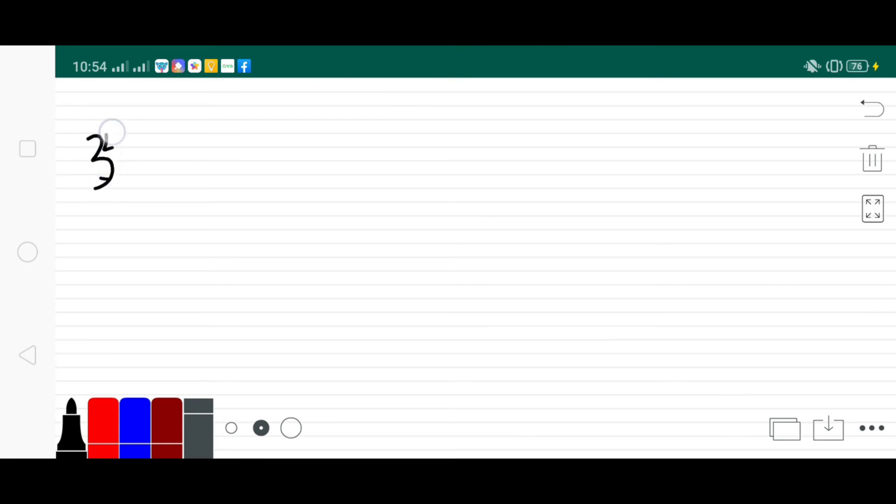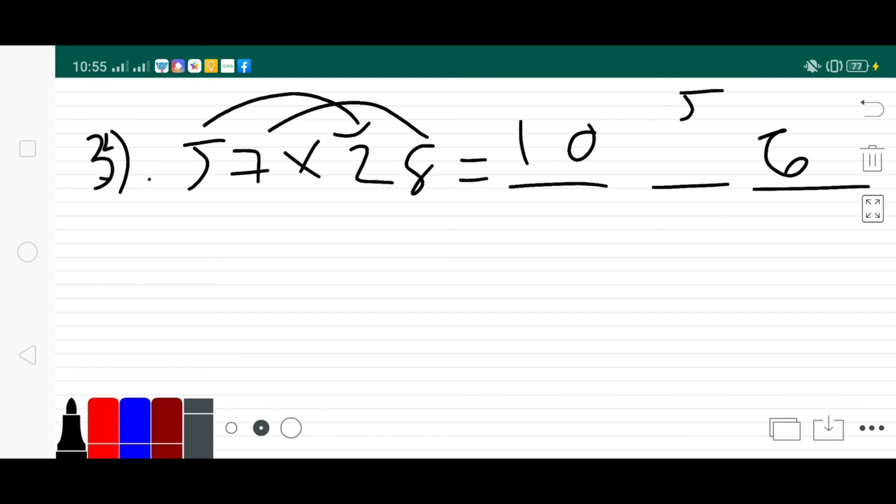Let's have another example number three. Okay, so let's say we have 57 times 28 equals to. So let's create three lines again, and let's multiply first 5 times 2, which is 10.